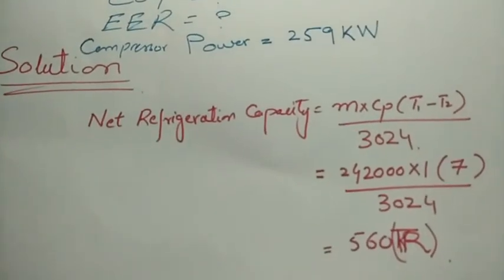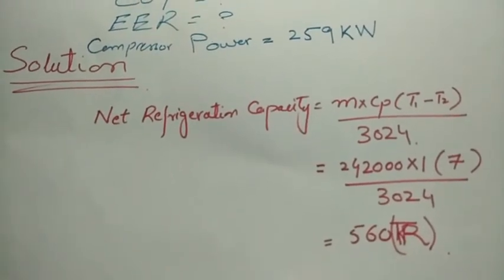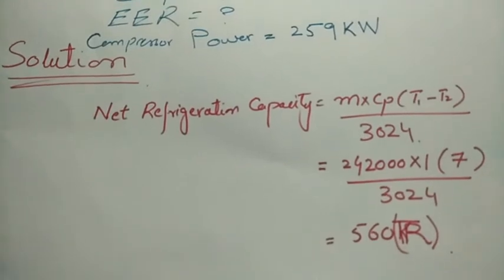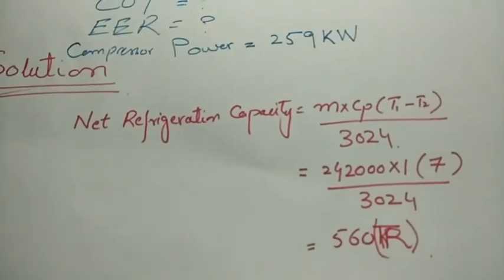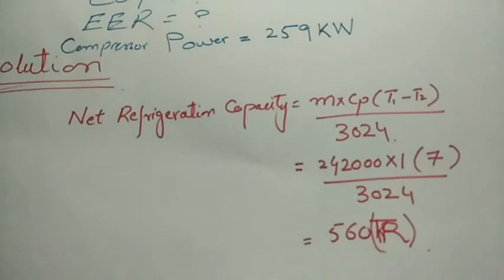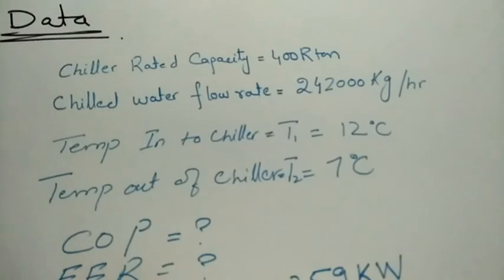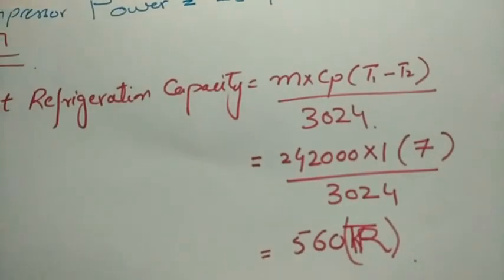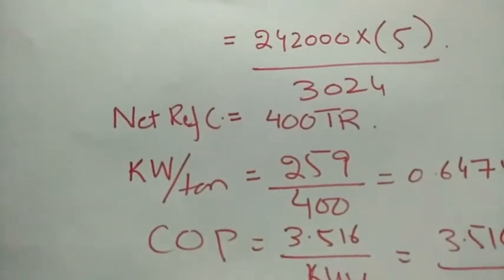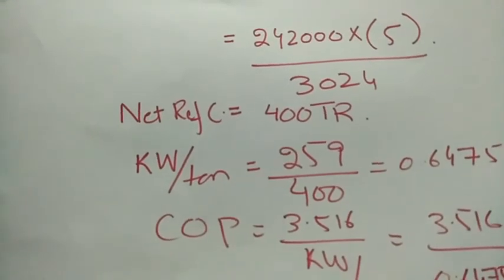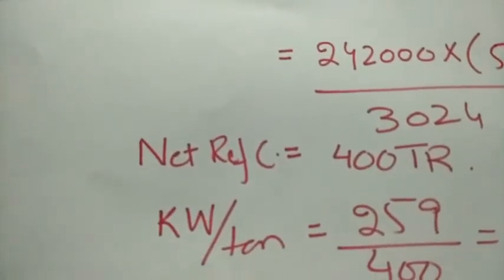First, we calculate net refrigeration capacity: NRC = mass flow rate × specific heat × temperature difference ÷ 3024. Mass flow rate is 242,000 kg/hr, specific heat of water is 1 kcal/kg°C, and the temperature difference is 12 − 7 = 5°C. So: 242,000 × 1 × 5 ÷ 3024 = 400 tons of refrigeration.